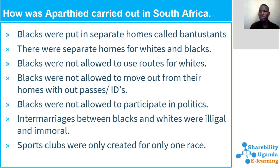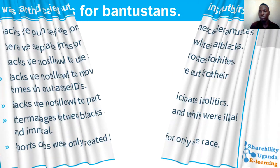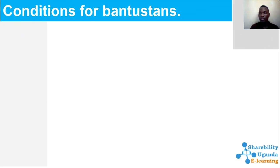Sport clubs were only created for one race — for example, only whites would compete and were the only ones qualified to have sports clubs, not Africans. It was a very bad disservice to the blacks. But we thank God all the conditions came to normal through the strong leadership of Nelson Mandela, who came and fought against apartheid policy.